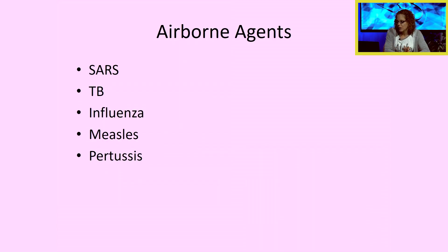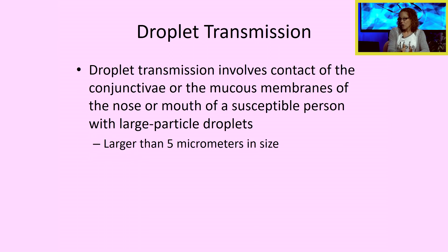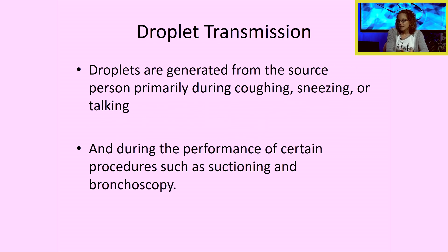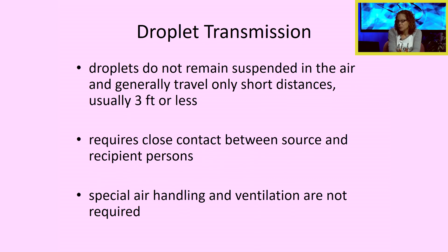Some of the airborne agents we know about are SARS, tuberculosis, influenza, measles, and pertussis. Droplet transmission involves contact of the conjunctiva — our eyes — or mucous membranes of the nose or mouth of a susceptible person with a large particle droplet, larger than five micrometers in size. The droplets are generally generated from the source person primarily during coughing, sneezing, or talking, and during procedures such as suctioning and bronchoscopy. Droplets don't remain suspended in the air and generally travel only a short distance, usually three feet or less.